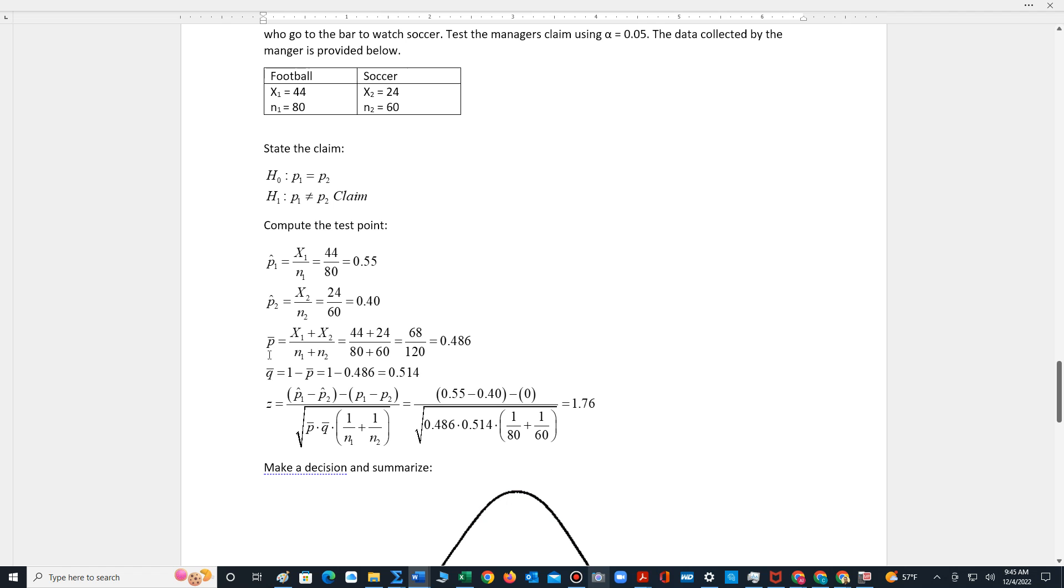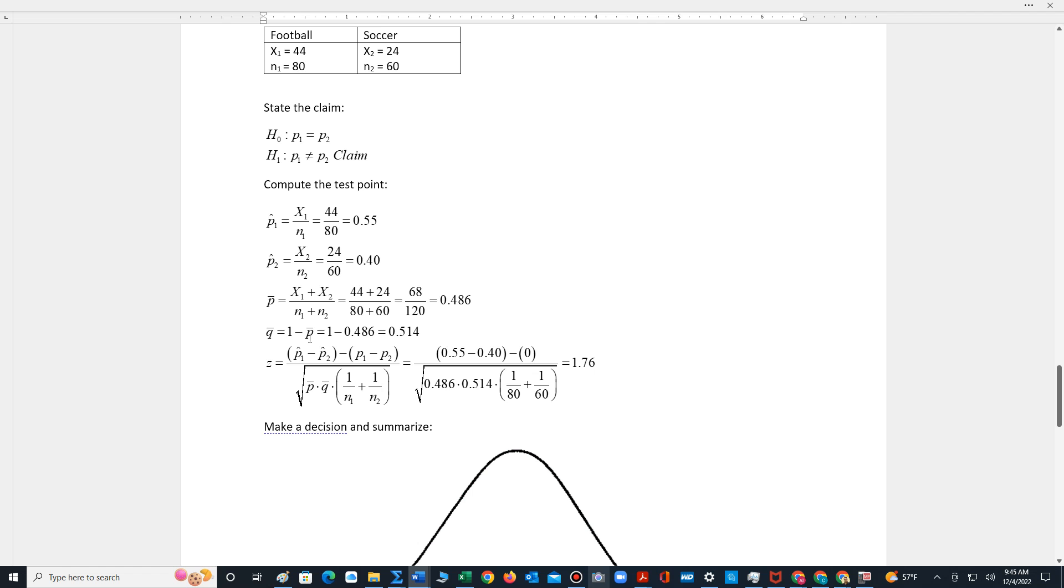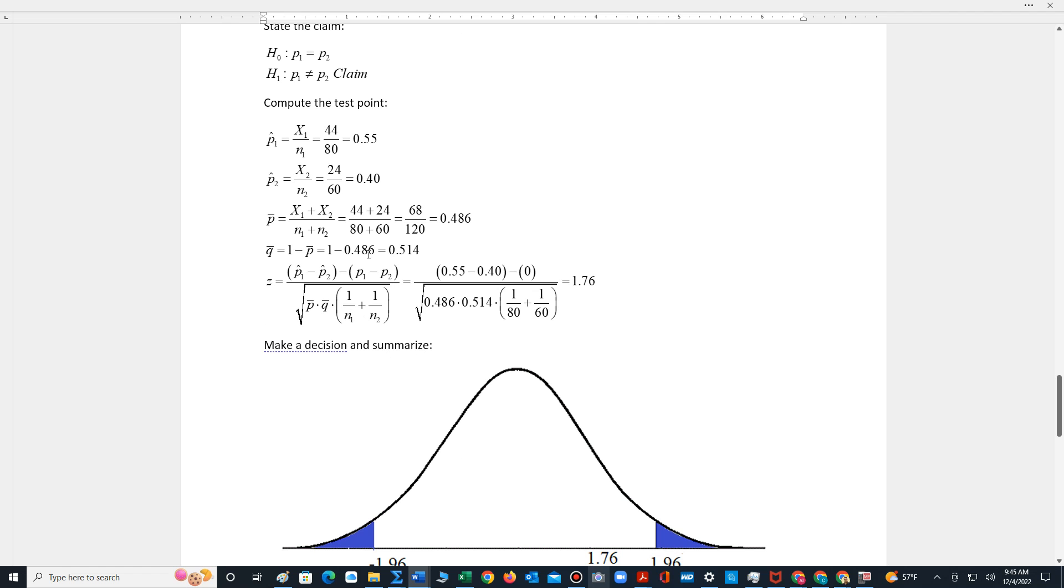Next we have to compute the weighted proportion, which is denoted as p-bar. So we add the two x's: 44 plus 24 is 68. We add the two sample sizes: 80 plus 60 is 120. Divide to get 0.486. We then calculate q-bar: it's 1 minus p-bar, so 1 minus 0.486 is 0.514.